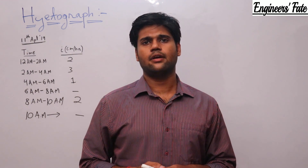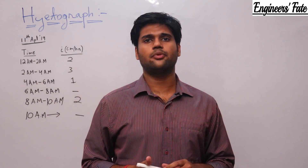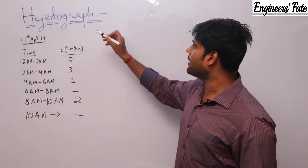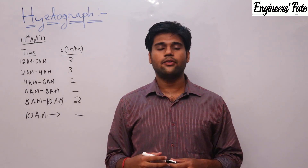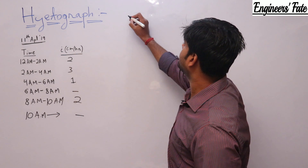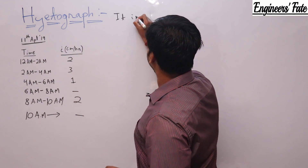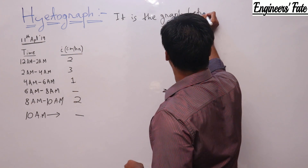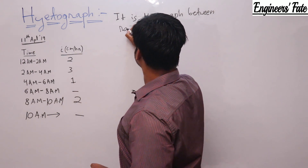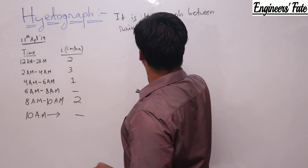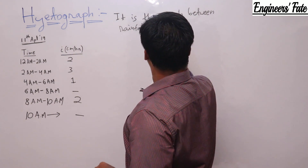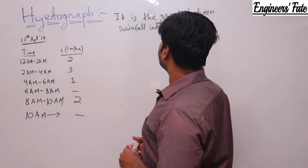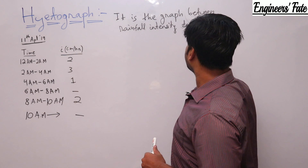Hi and welcome to Engineer's Fit. In today's class we have to see two of the most important terms: hyetograph and mass curve. Let's begin with hyetograph first. A hyetograph is a graph between rainfall intensity and time.